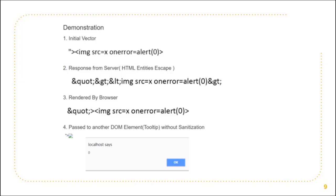I passed the vector in the file name using a Linux operating system — we can assign this type of file names. The response from the Google server turned out like this: they sanitized it properly. But when you see the HTML entity 'greater than' sign, it is rendered as the actual character in the browser. The third thing that made execution possible is that when this sanitized value is passed to another DOM element, it will get executed. On the third stage it is now properly sanitized, but when passed to another DOM element, the vector works because the greater than and less than signs are rendered properly. That is how it goes, and the execution was successful.